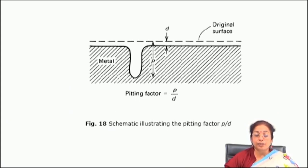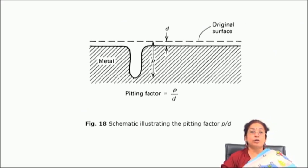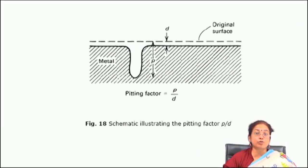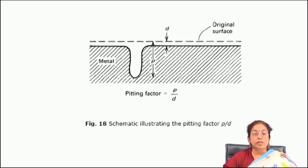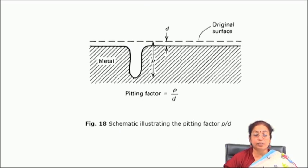Pitting is also evaluated by the pitting factor. The pitting factor is the ratio of the total pit depth to the overall general corrosion depth. Whenever there is pitting attack, naturally there is also general corrosion attack, because whenever you expose metal to the environment there will be both general corrosion and pitting corrosion. So it is very important to know the pitting factor. It is well documented so that you have some idea about the pitting corrosion tendency of the metal in practice.